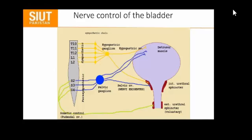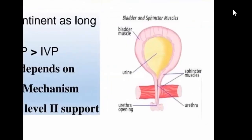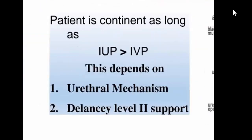We can control voiding voluntarily. Continence is maintained as long as intraurethral pressure is more than intravesical pressure. This depends on several mechanisms relating to urethral resistance and detrusor activity.